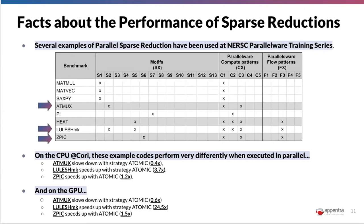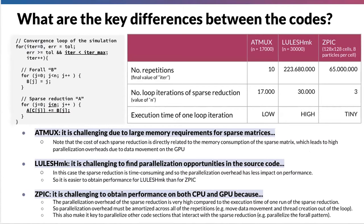This is what we are trying to understand. You can see that the three codes — particularly the corresponding sparse reductions — are being evaluated according to three criteria: number of repetitions, because typically in simulation loops we do millions of invocations of a given motif; the number of iterations of the sparse reduction itself, which can go from 0 to 3 or from 0 to 30,000; and the computation per iteration, which can have a significant impact.